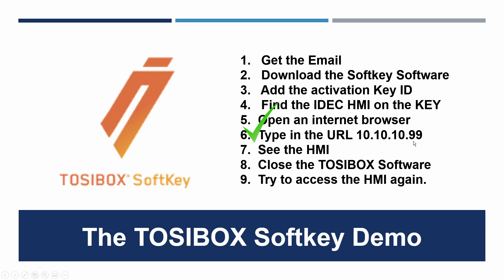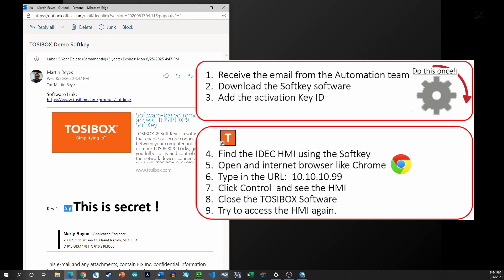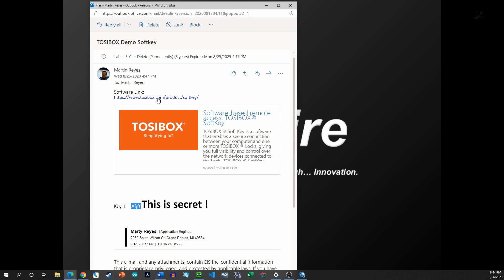Step five is to open an internet browser, and step six is to type in 10.10.10.99 — that's the IP address of the HMI on the other side of the network. You don't have to do anything to create the tunneling to reach that IP address; the TossieBox does all the heavy lifting. Once you see the HMI, you can interact with it, and then you close the TossieBox software to verify the secure connection goes down.